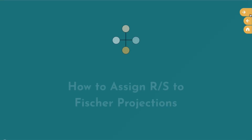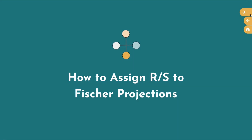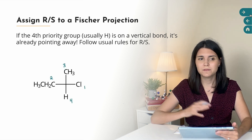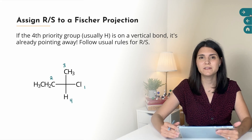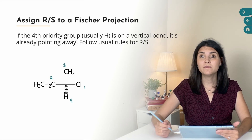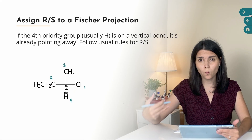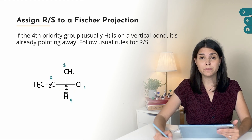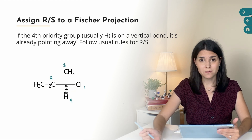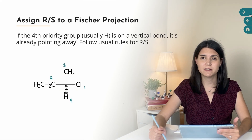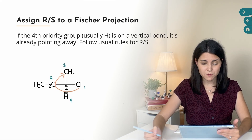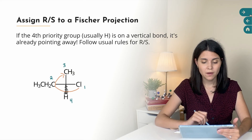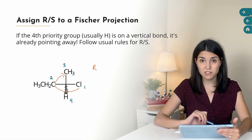Here's how we assign the R or S configuration to carbons in a Fischer projection. We start by giving the four groups around the chirality center their priorities according to the Cahn-Ingold-Prelog rules. If the fourth priority group is on a vertical bond, that means it's already pointing away from us, which is what we want. We look at priority groups one, two, and three and trace the circle from one through three. If that circle is clockwise, the configuration is R; if counterclockwise, it's S. For this molecule, chlorine is first priority, the ethyl group is second, and the methyl group is third. Tracing that circle gives a clockwise direction, so the configuration is R.